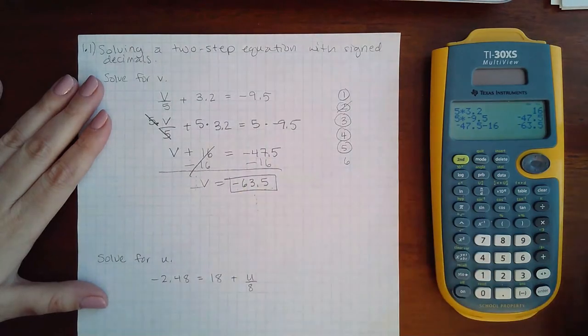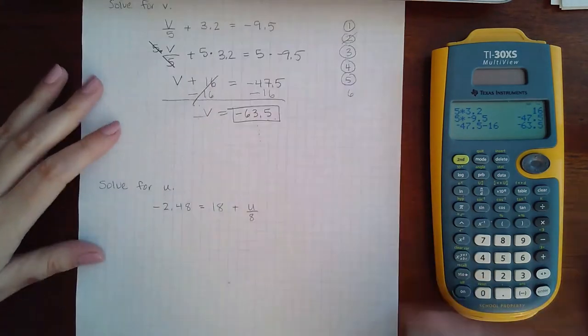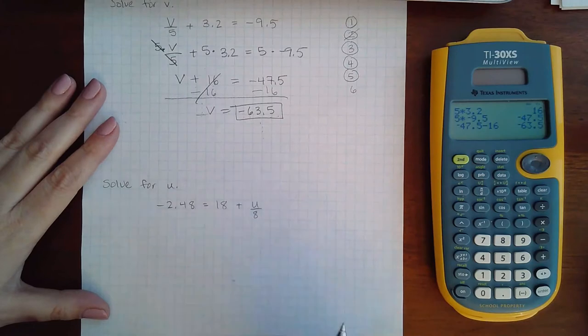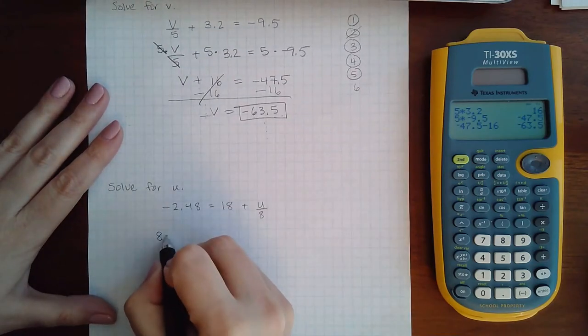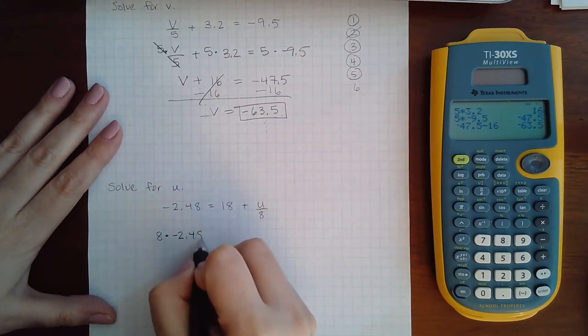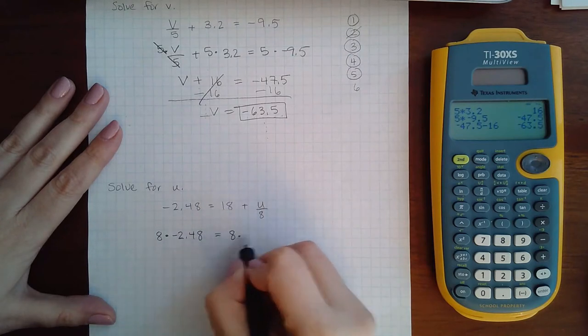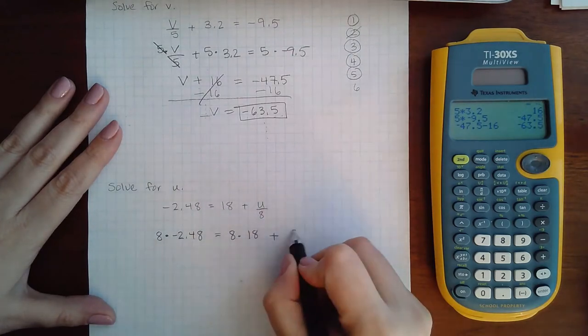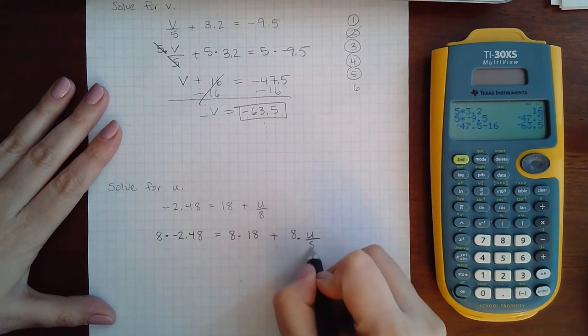And let's try another one. Here the common denominator is eight, so I'm gonna take eight times negative 2.48, eight times 18, plus eight times this fraction. Notice I did eight times every single term.